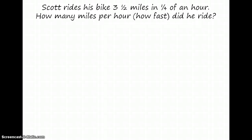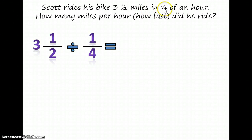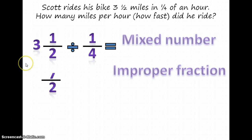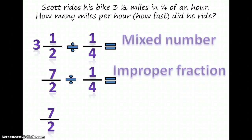Now let's check our work by solving this problem numerically. We can write it as three and a half because we have three and a half miles, divided by one fourth because we have one fourth of an hour. Again, this is a mixed number and we need to change it to an improper fraction in order to solve. So we take three times two which is six, add the one so we have seven, and keep the denominator — so we have seven over two. The second fraction stays the same. But in order to multiply, we keep the first fraction the same and then invert or flip the second fraction, so we now have four over one.